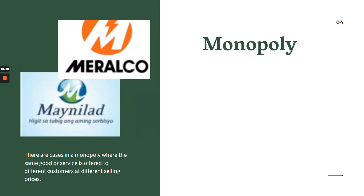There are also cases in a monopoly where the same good or service is offered to different customers at different selling prices. Like with Meralco — lahi-lahi ilang rate. If you are an industrial company subscribed to Meralco, your rate per kilowatt hour is different from a residential account. So the same product is offered at different prices to different classifications of customers — commercial account and residential account. That's a monopoly.